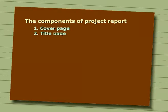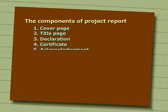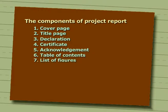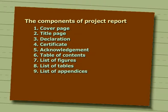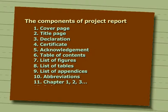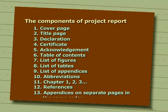The project report should have the following components: cover page, title page, declaration, certificate by the college and the business organization, acknowledgement, table of contents, list of figures, list of tables, list of appendices, abbreviations, chapters (1, 2, 3 and so on), references, and appendices on separate pages in the same order.